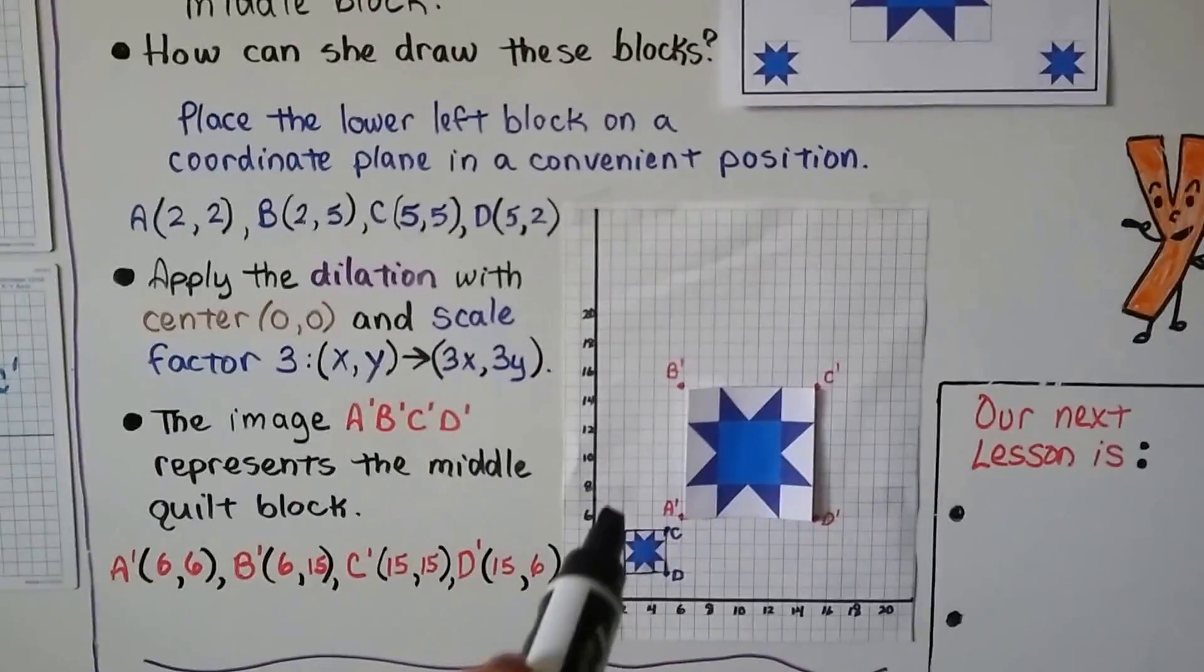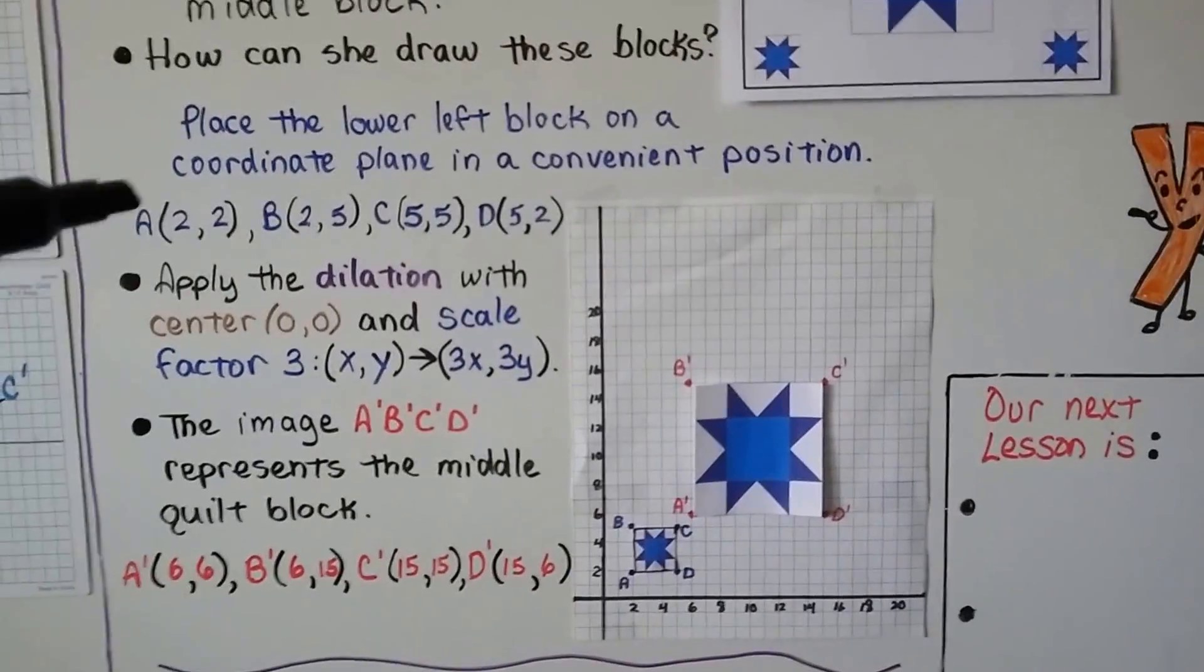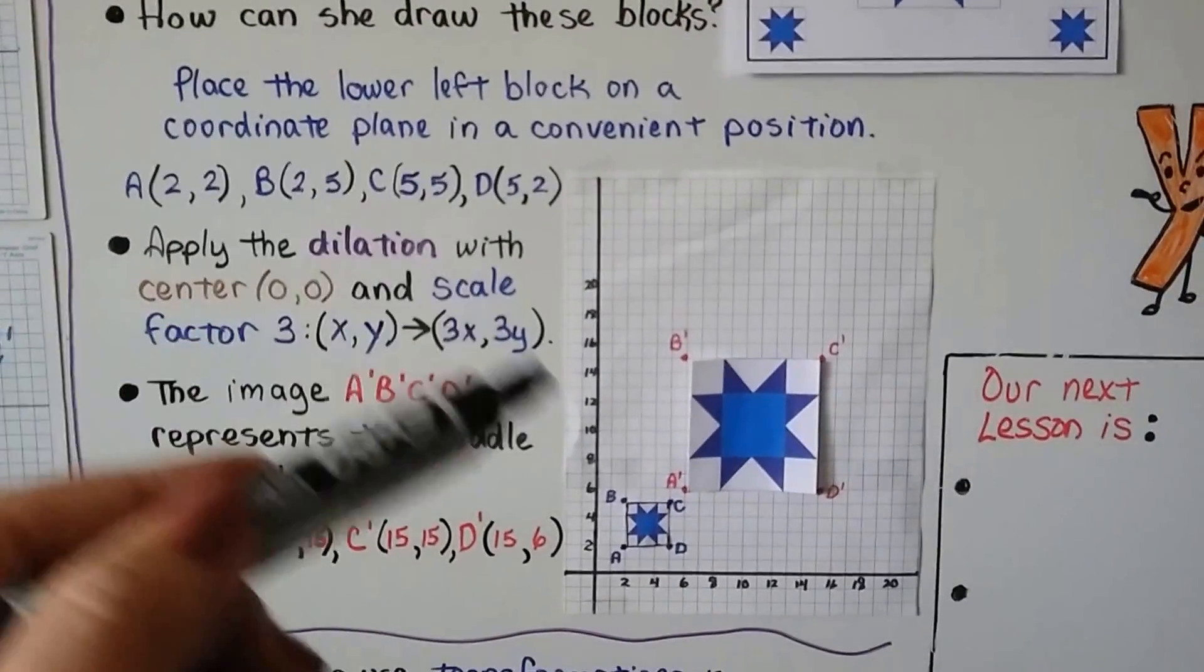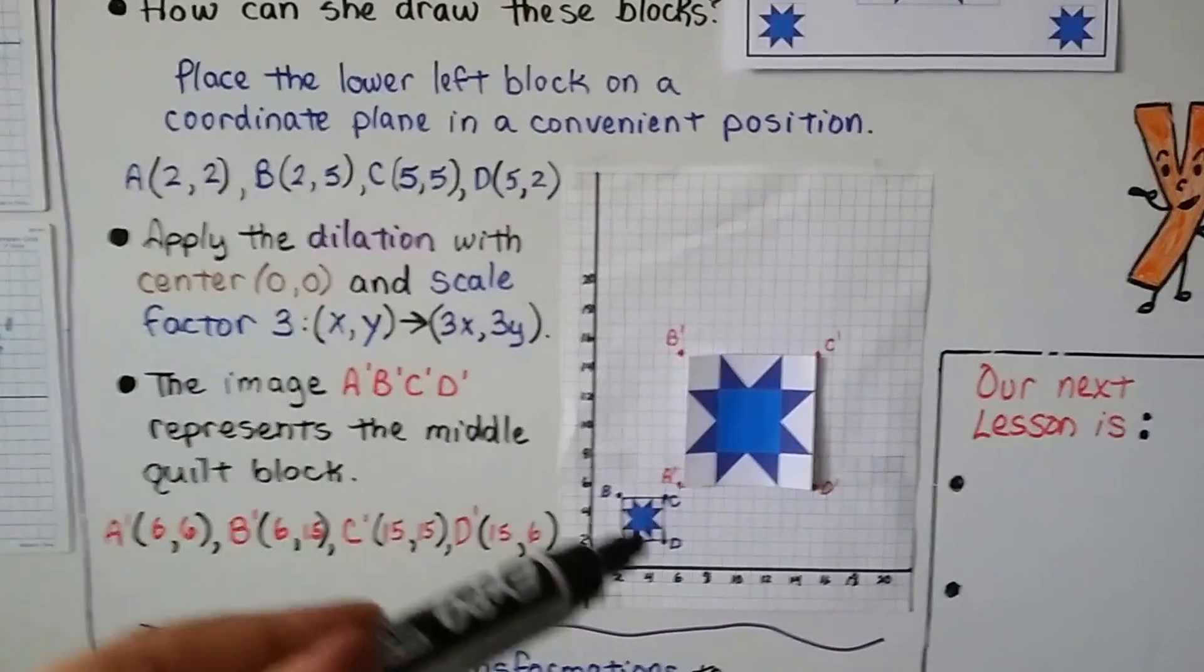She can place the lower left block on a coordinate plane in a convenient position so she can draw it there. And she can plot the points of where it's at: a is at 2,2, b is at 2,5, c is at 5,5, and d is at 5,2.